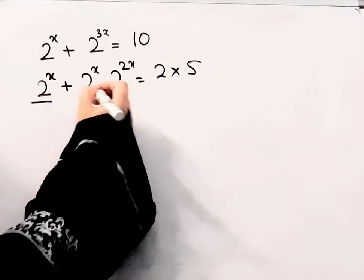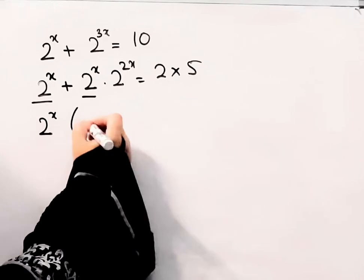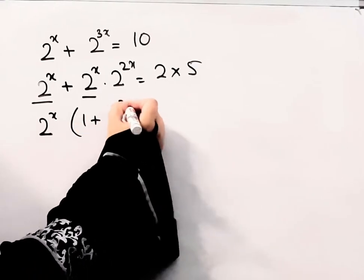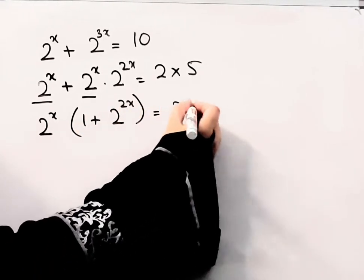I will take this 2 to the power x as common. So it will be 1 plus 2 to the power 2x. This is equal to 2 into 5.